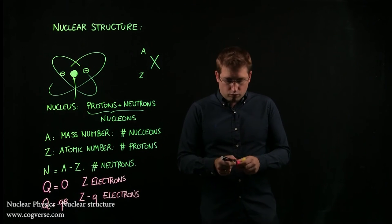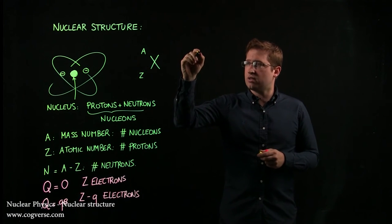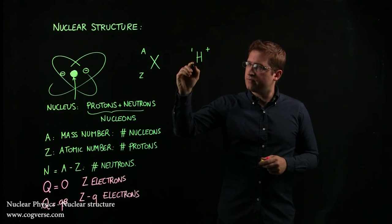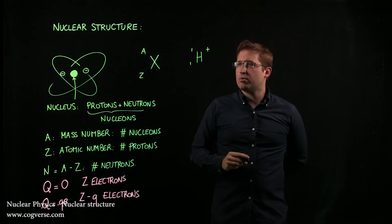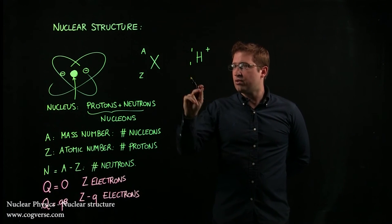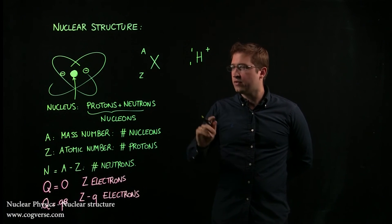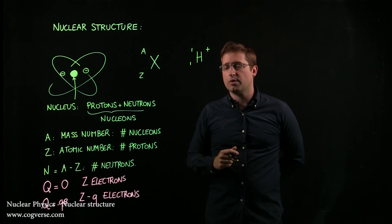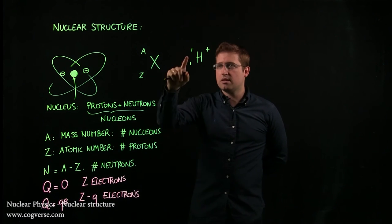Now, we could take an example. For instance, we could consider H+. Hydrogen has a mass number of one and an atomic number of one, which means that there's one nucleon, and that the only nucleon there is is a proton, because Z is equal to one. A minus Z is going to be zero, which means that there are no neutrons.